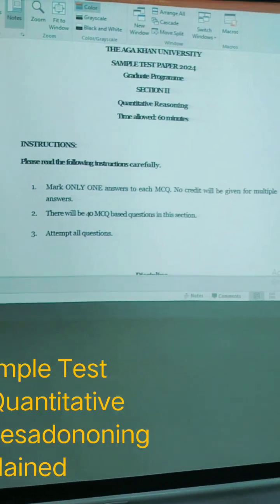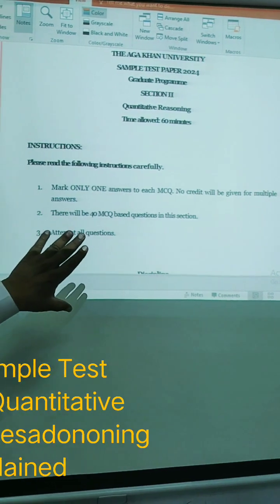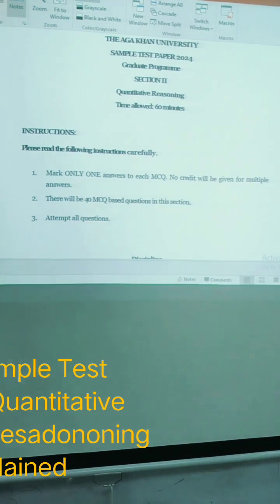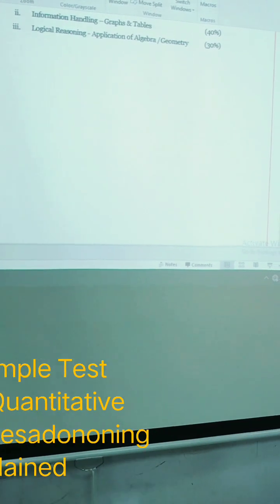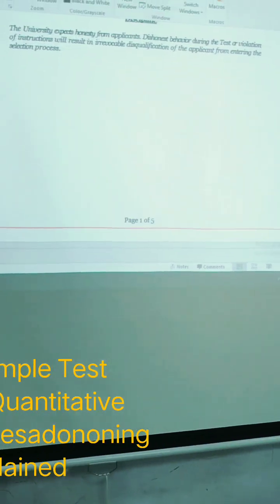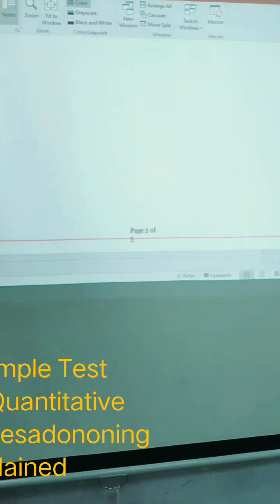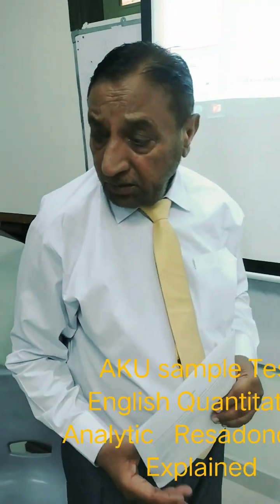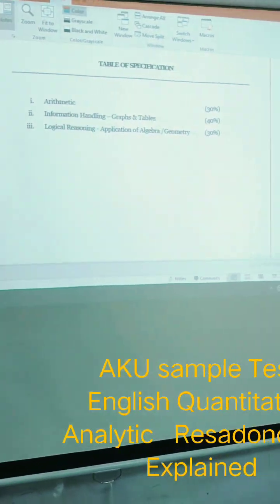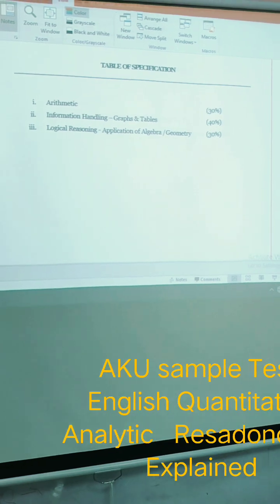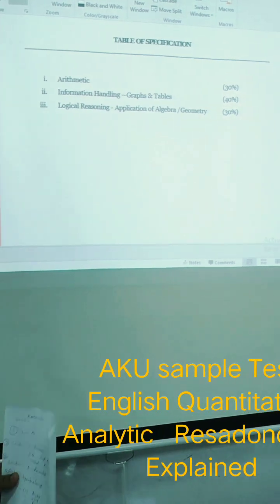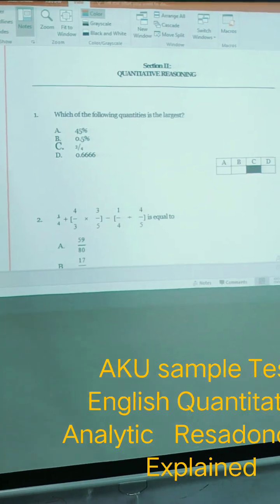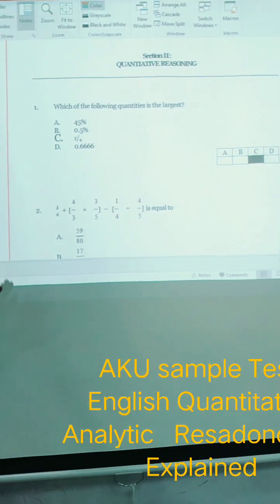Now we are moving to quantitative reasoning. Mostly mathematics is given. The university expects honesty, same thing is there. And here they have given the table showing the sequence of questions. Arithmetic 30 percent, information handling 40 percent, and logical reasoning application. We will touch it later on. We have done the English section and now we are going to quantitative reasoning.